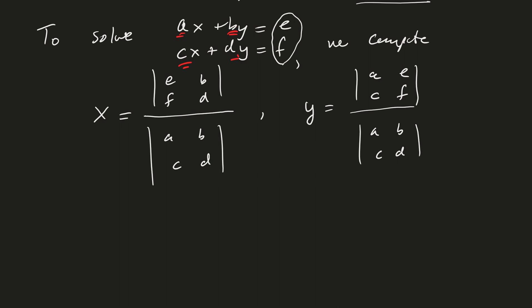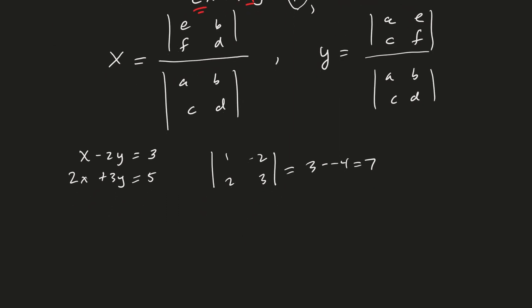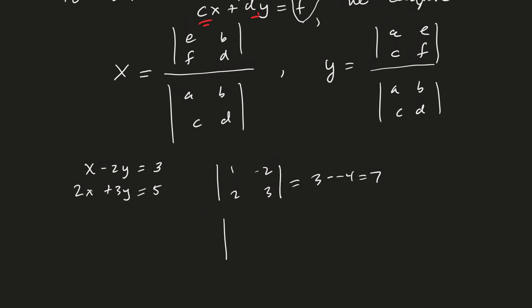And so just as a quick example, suppose we have X minus 2Y equals 3, 2X plus 3Y equals 5. Then to solve this for X and Y, we go ahead and create the matrix that's going to be in the denominators. Take the determinant, that's 3 minus, minus 4, which is 7, right? And then for the X coordinate, we take 3, 5, and then keep the other column. So it looks like it's going to be 9 minus, minus 10, is that right? So that's 19.